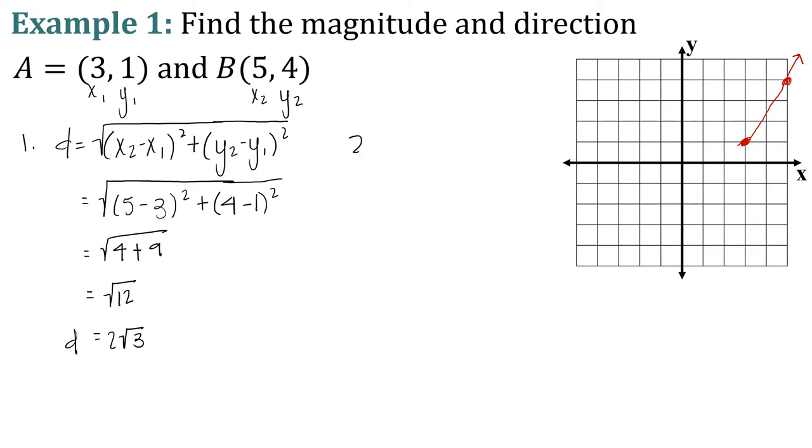Now, our magnitude is going to be slope, y sub 2 minus y sub 1, all over x sub 2 minus x sub 1. So 4 minus 1, all over 5 minus 3. 4 minus 1 is 3, 5 minus 3 is 2. So our direction is in the positive direction, 3/2, and that makes sense if we look at our picture to the right of your screen.